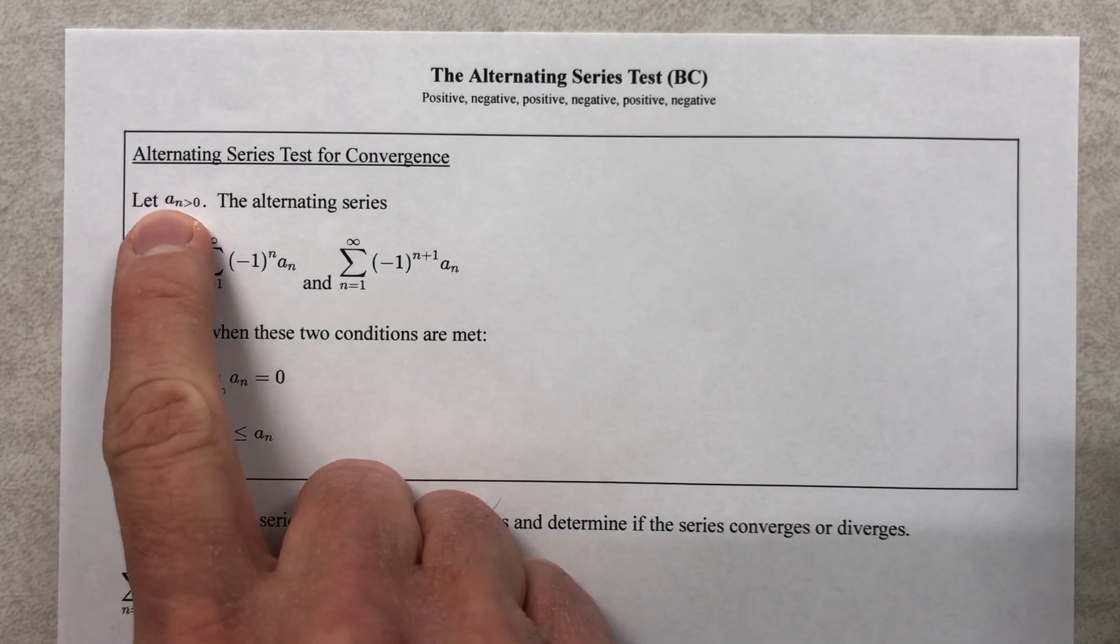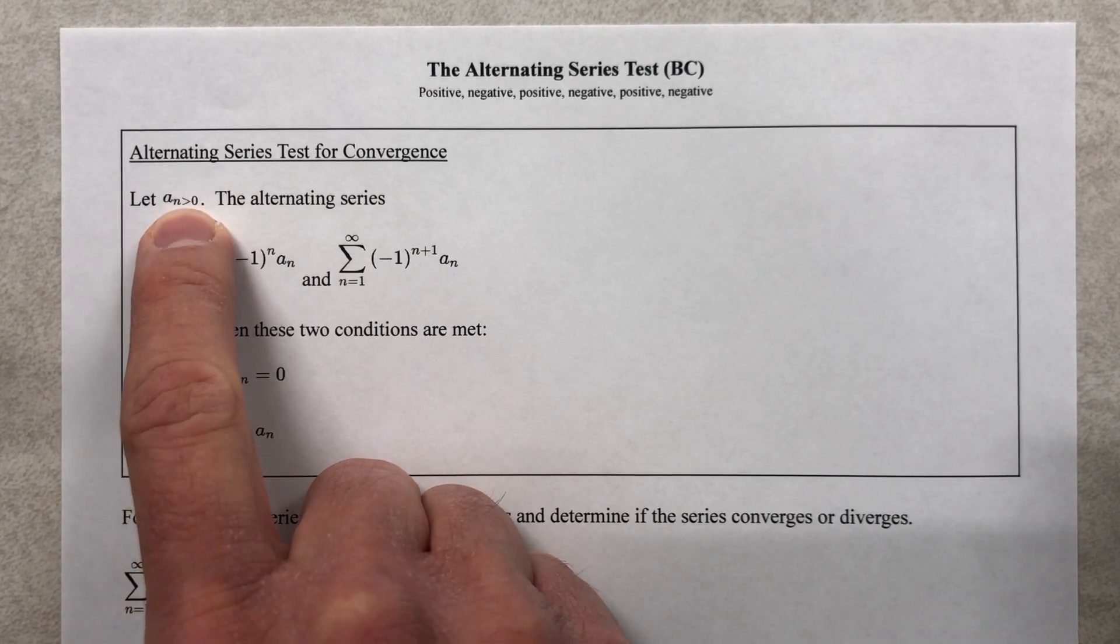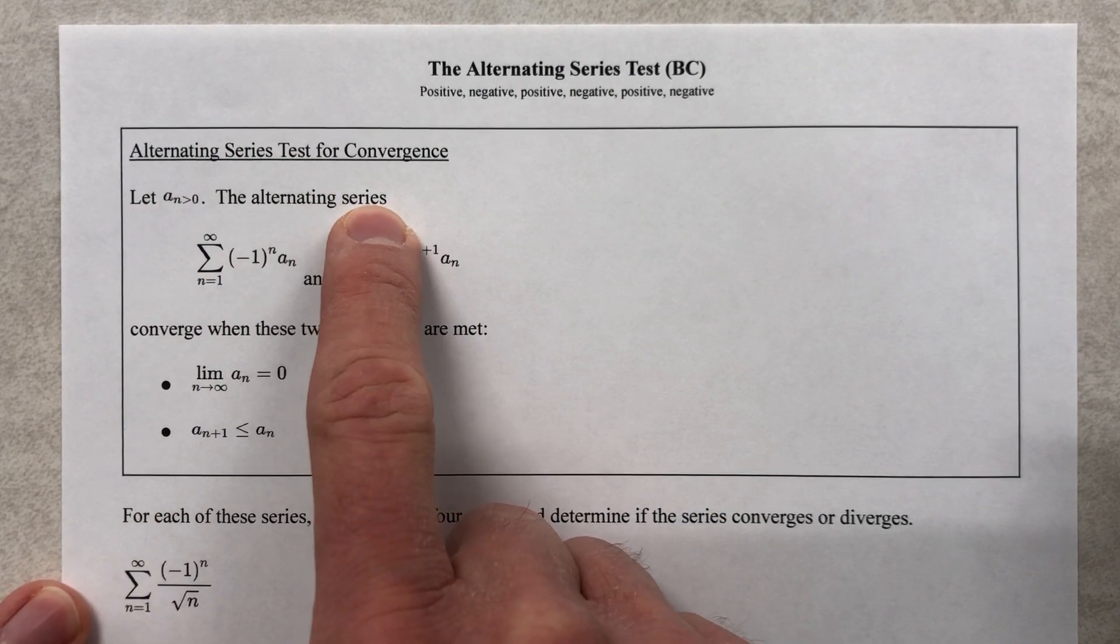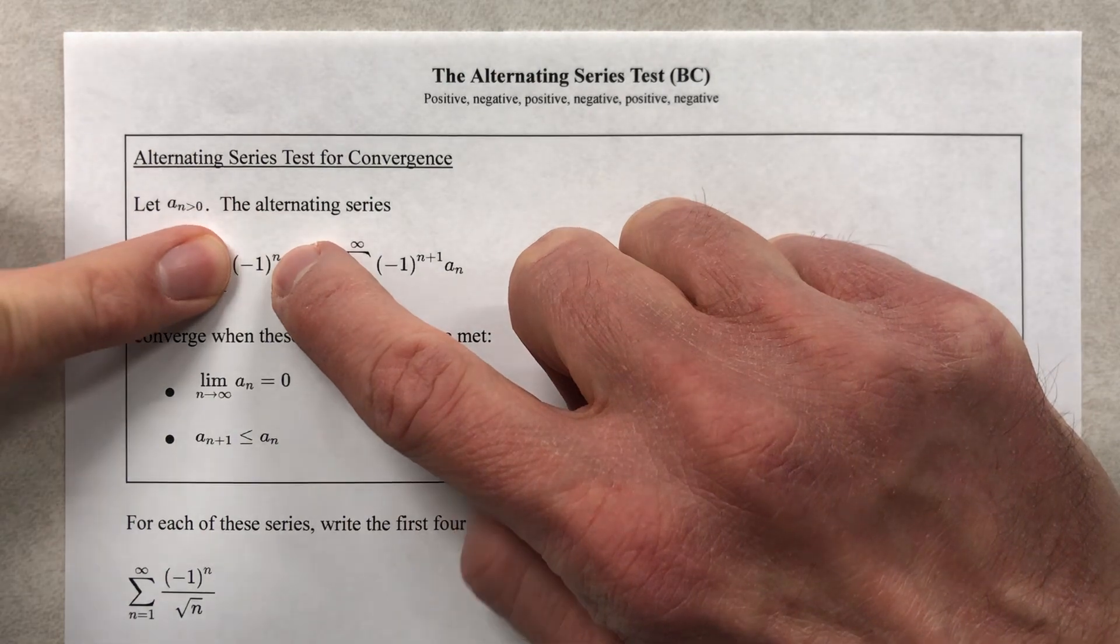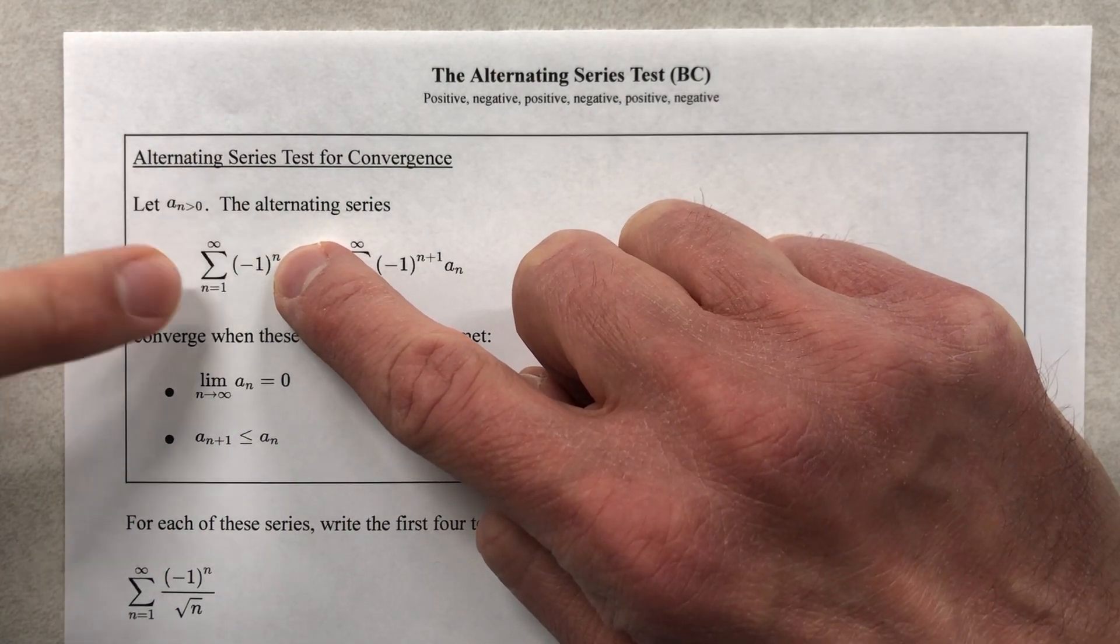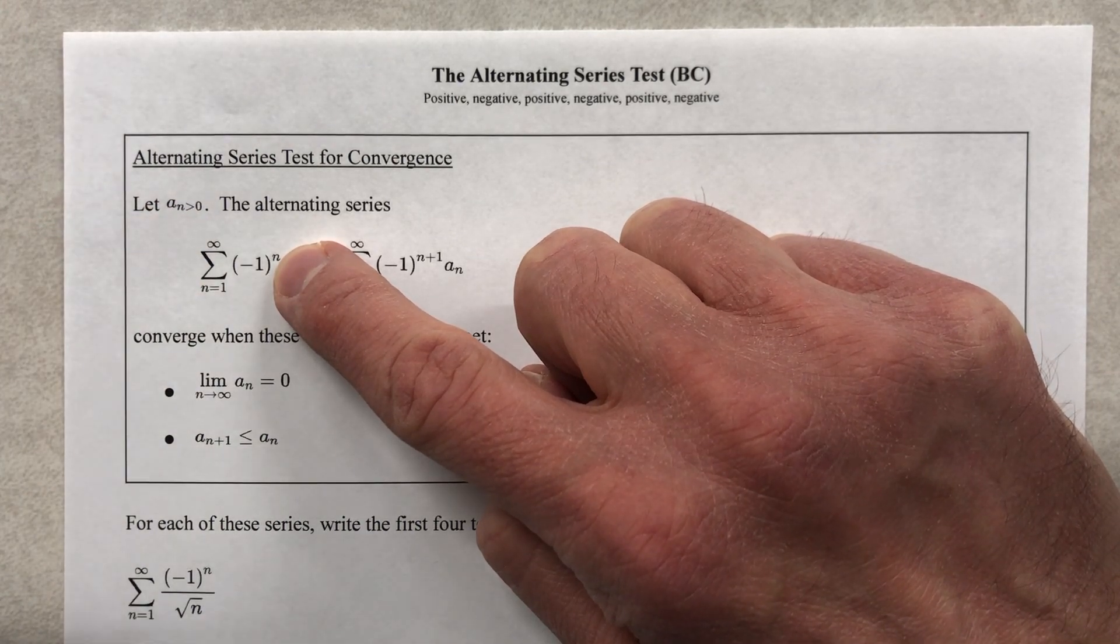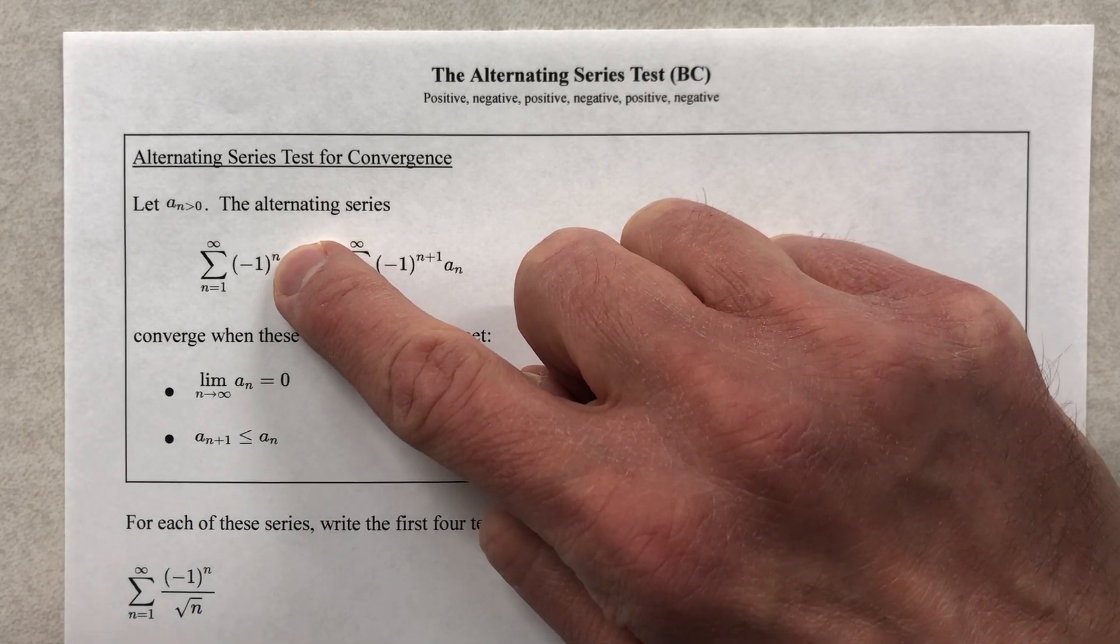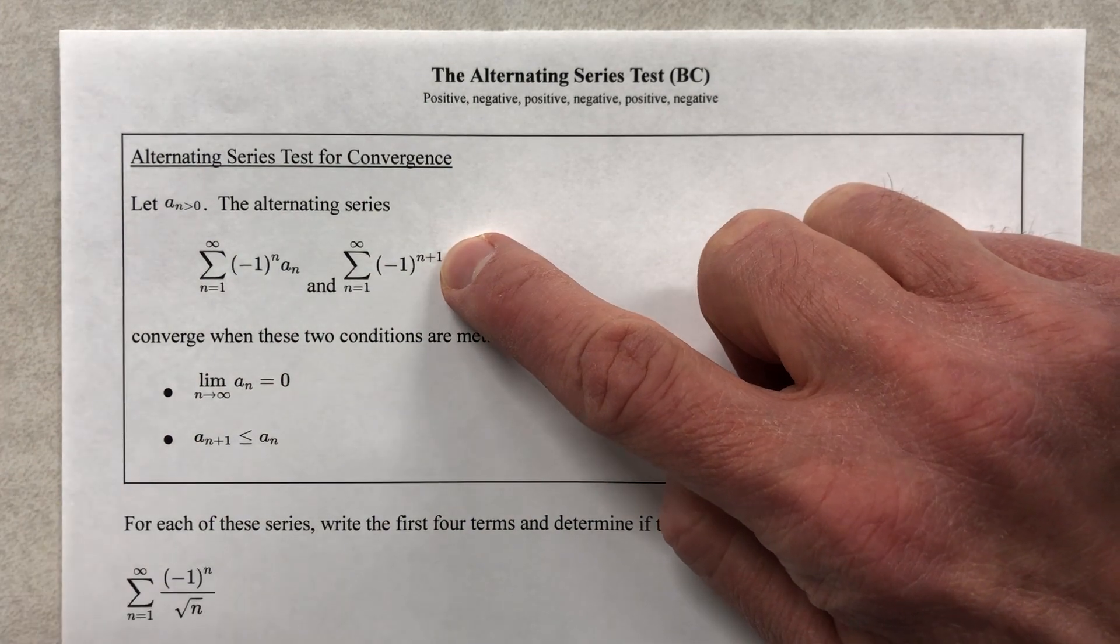We're going to let a sub n be greater than zero, and that means that the explicit term is positive. Then the alternating series is going to be, just look at that part, positive, but then we have negative one to the n. And when you have negative one to the first, then the second, then the third, fourth, fifth, sixth, then you're going to have a negative, then a positive, then a negative, then a positive, alternating. It's the same thing if you have n plus one as an exponent. Your signs are going to be alternating, right?